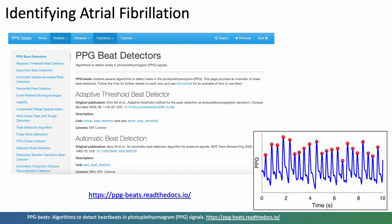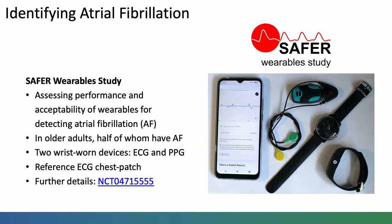We're contributing to this line of work, firstly by making PPG beat detection algorithms available and benchmarking them so you can access our toolbox of algorithms here, and also by conducting our own study to assess the performance and acceptability of wearables for detecting atrial fibrillation. We'll be enrolling older adults, half of whom have AF, and asking them to wear two wrist worn devices, one to capture the ECG and one to capture the PPG, and using a reference ECG chest patch.